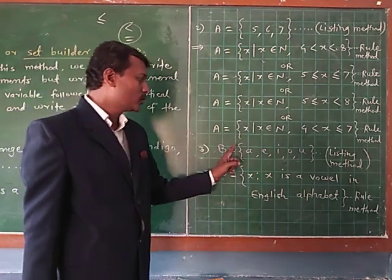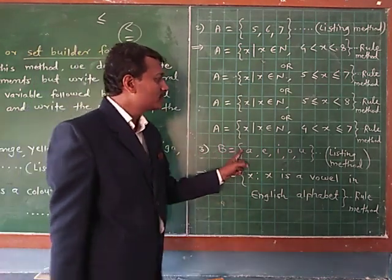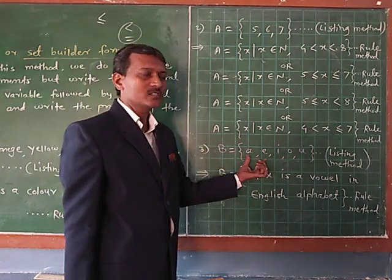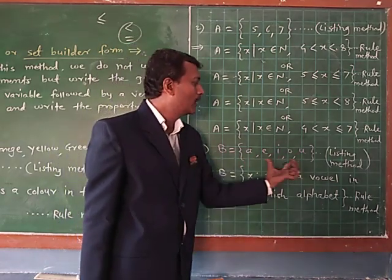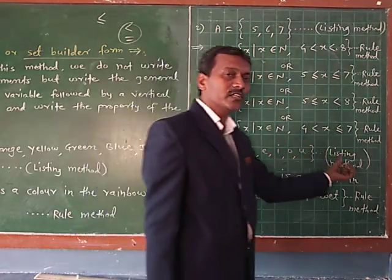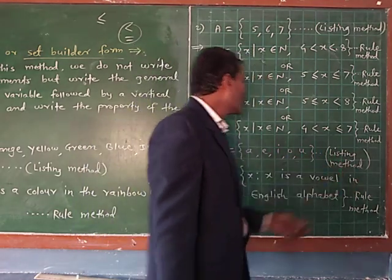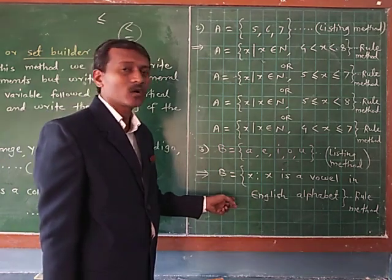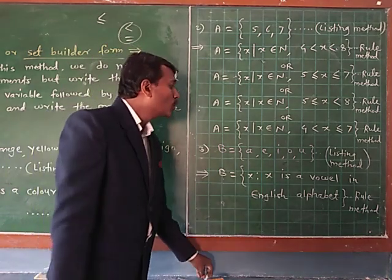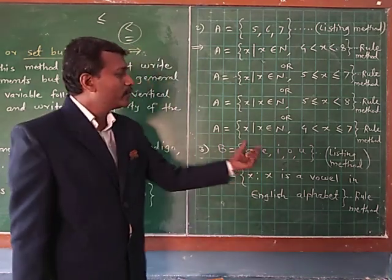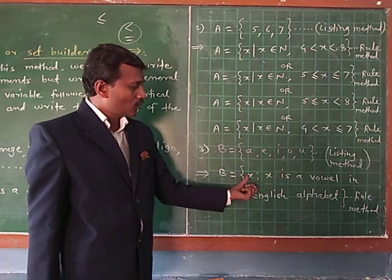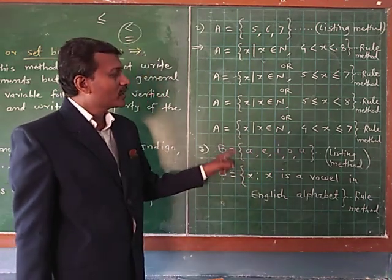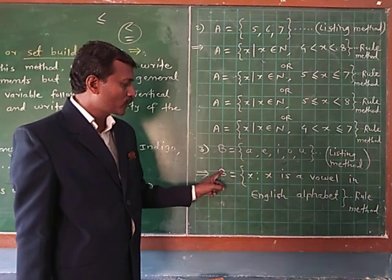Third example: B = {A, E, I, O, U}. There are 5 members: A, E, I, O, U. This example is in listing method. Convert this example into rule method or set builder form. Don't write any element; use only x or y, that is the variable.